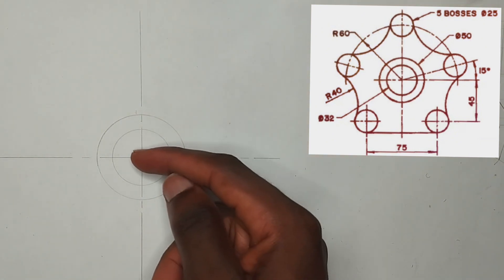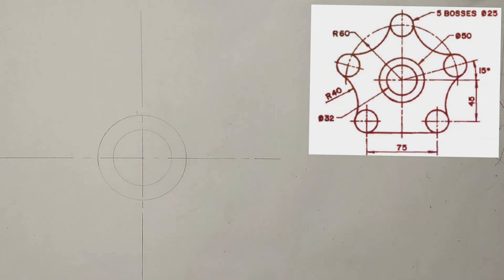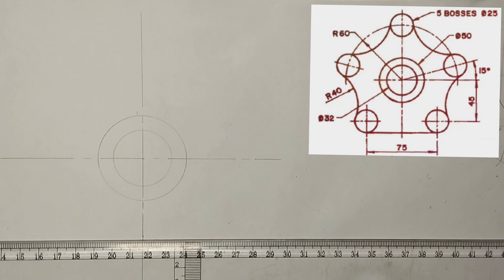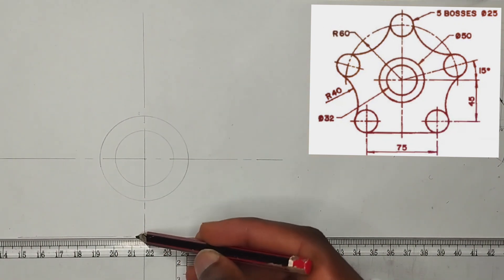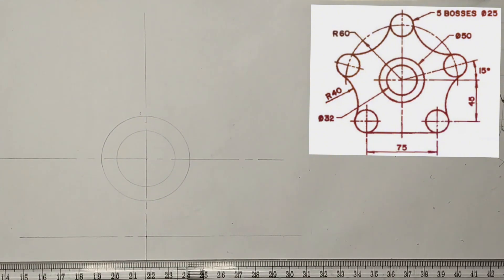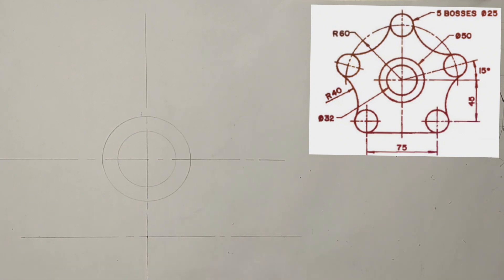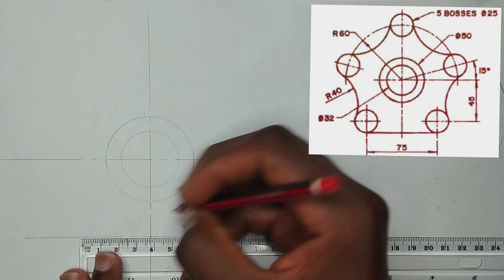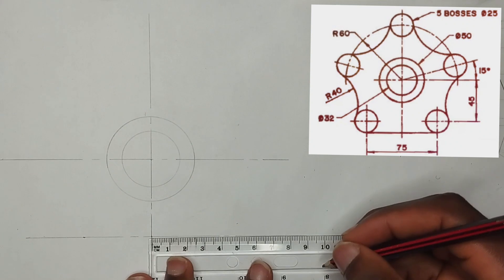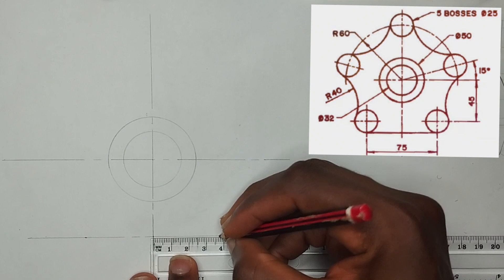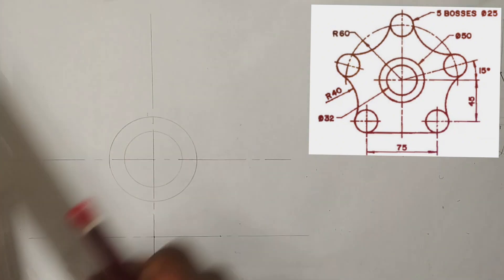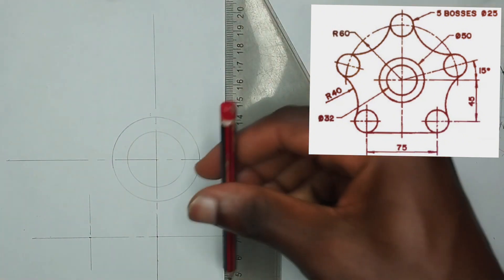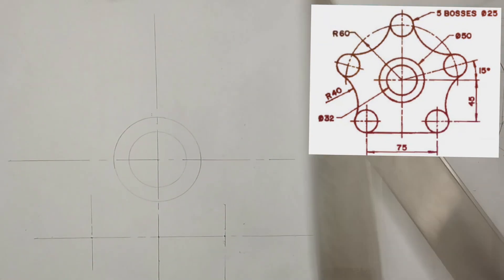We have been given a length of 45 millimeters from this center to the center of the two side circles. I'm going to pick 45 millimeters on my ruler, then at that point draw a thin long chain line since it represents the center line of those circles. The circles are distanced from each other by 75 millimeters, so I'm going to pick 37.5 millimeters from my left hand side, then another 37.5 millimeters on my right hand side, which will be the center points for the two small circles. I'll draw a straight vertical line at each of these points.